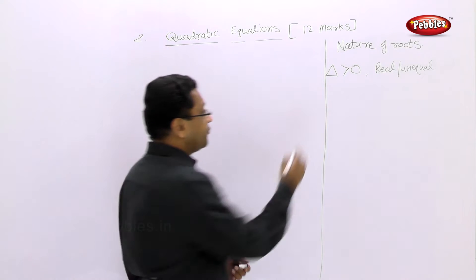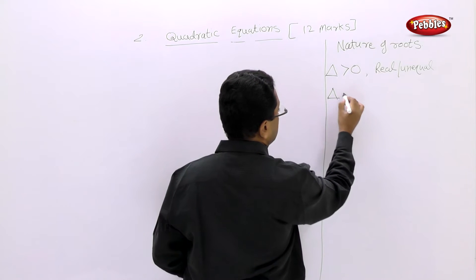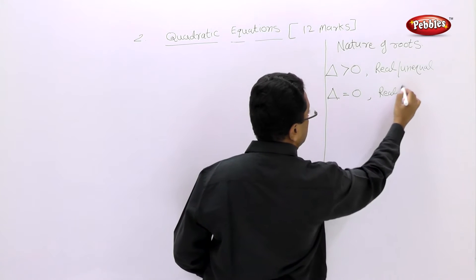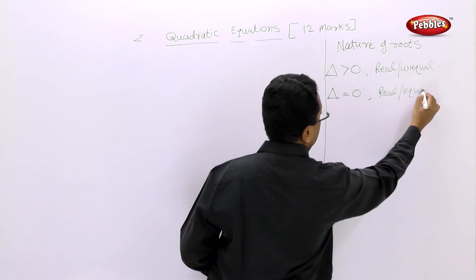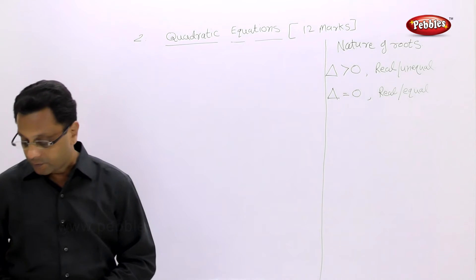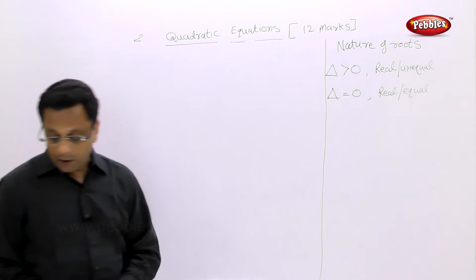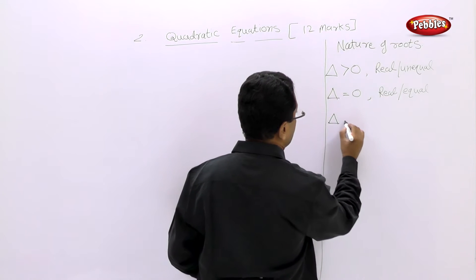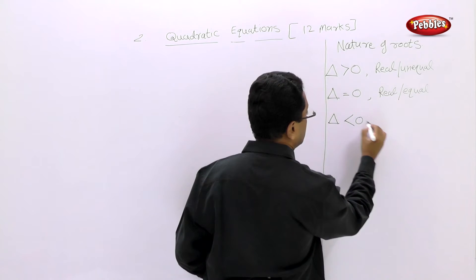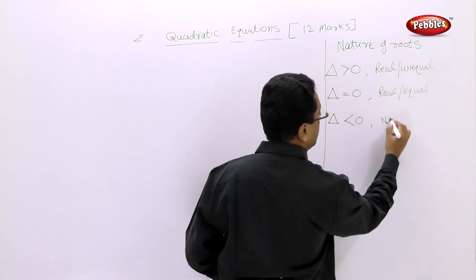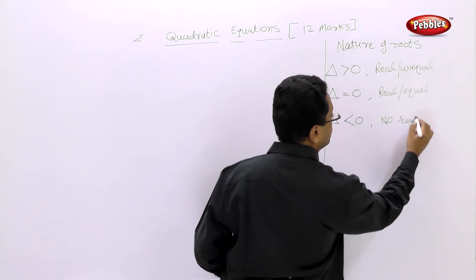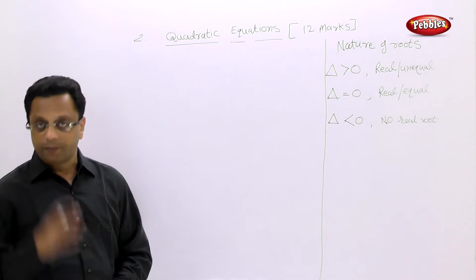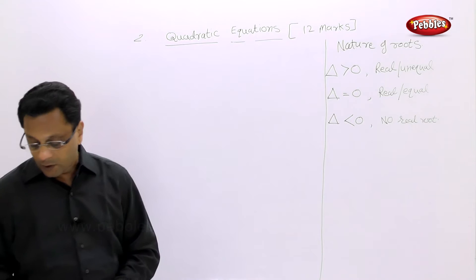If the discriminant is equal to 0, then the roots are real and equal. If the discriminant is less than 0, then there are no real roots.